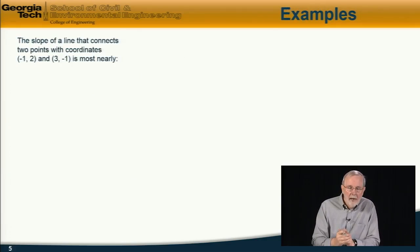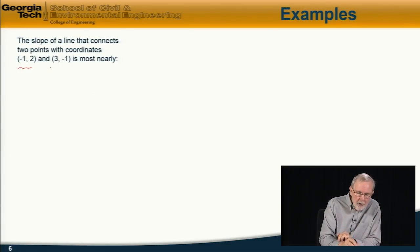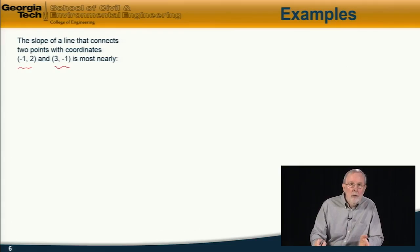So let's do an example on that. The question is: the slope of a line that connects two points with coordinates (-1, 2) and (3, -1) is most nearly which of these alternatives?